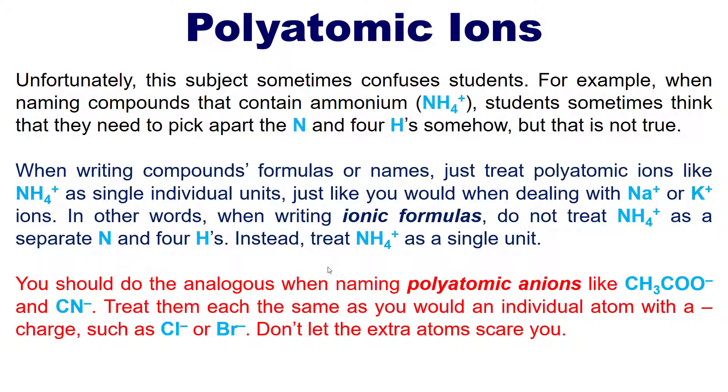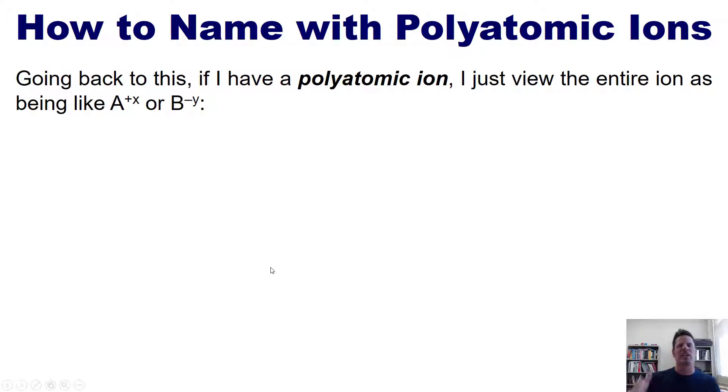So how do you name substances that contain polyatomic ions? Going back to principles we discussed in an earlier video on naming ionic compounds, if you have a polyatomic ion, I just view the entire ion as being like A^x+ or B^y-. If you've got a cation with charge +x paired with an anion with charge -y, all you do is take the x and move it down as the subscript next to anion B, and take the y and move it down as the subscript next to cation A. Then slap them together to give you AyBx. The charges will line up so they cancel each other out.